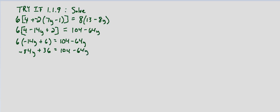I'm going to go ahead and move the variable to the left-hand side. You could move it to the right-hand side as well so you end up with a positive coefficient in front of the variable term. But I'm going to add 64y to both sides, which is going to give us negative 20y plus 36 equals 104. Then subtract 36 from both sides.